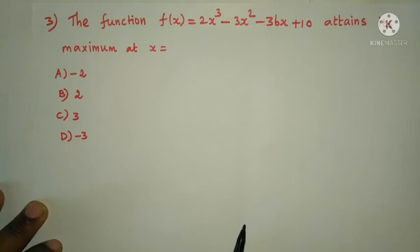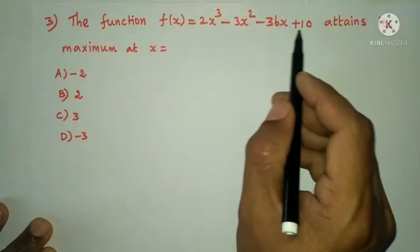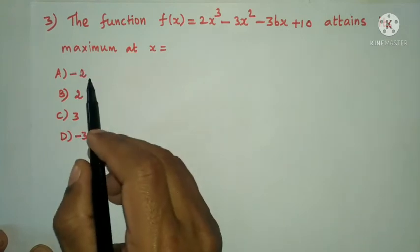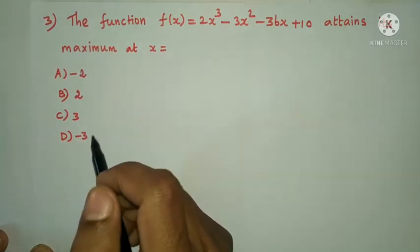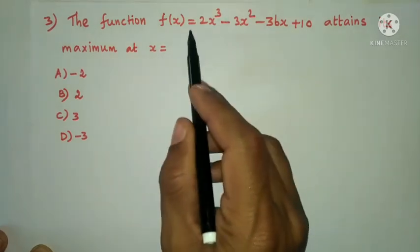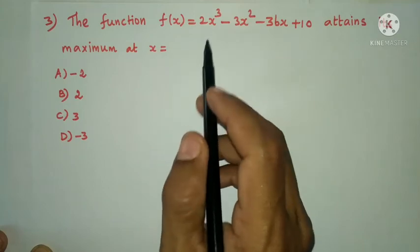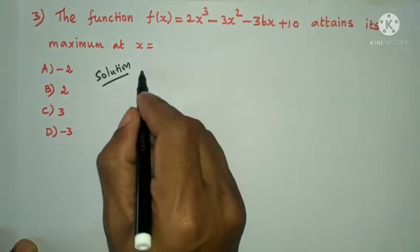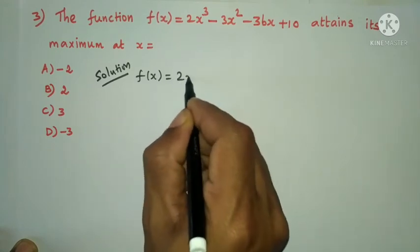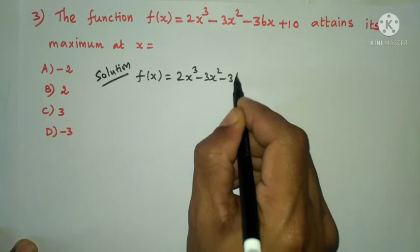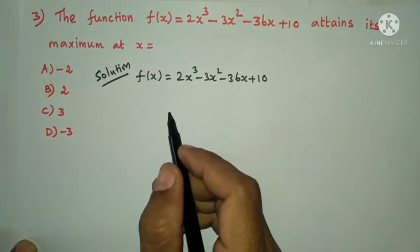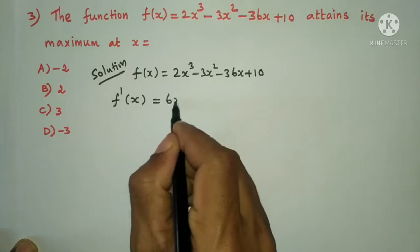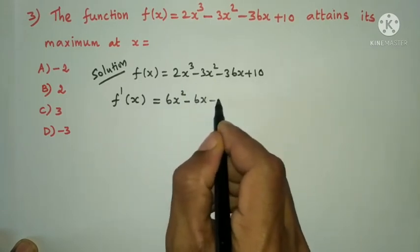Next question: the function f(x) equals 2x³ minus 3x² minus 36x plus 10 attains its maximum at x equals minus 2, plus 2, plus 3, or minus 3? First, f'(x) equals 6x² minus 6x minus 36.